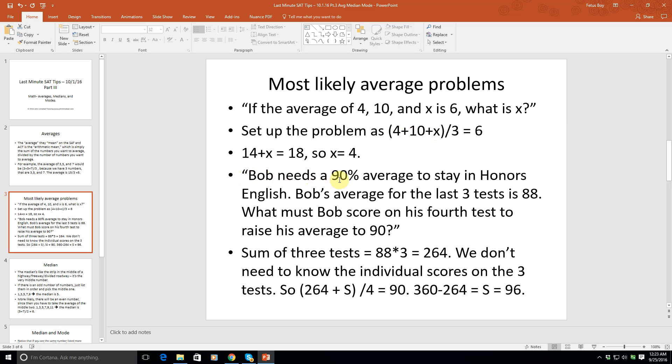Here's another question: Bob needs a 90% average to stay in Honors English. Bob's average for the last three tests is 88. What must Bob score on his fourth test to raise his average to 90? The sum of the three tests is 88×3 = 264. We don't need to know the individual scores. We have (264+s)/4 = 90, where s is the score he needs on his fourth test. Multiply by 4 to get 360, so 360-264 = s = 96.